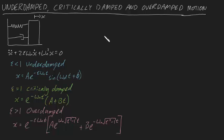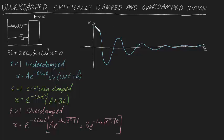In the case that the block is given an initial displacement and released from rest, the underdamped curve will look like this. Notice an exponentially decaying amplitude, yet a constant frequency. The critically damped block doesn't oscillate and approaches equilibrium the fastest.